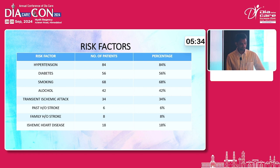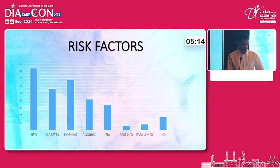Amongst the risk factors, hypertension was the most important, seen in 84% of patients, followed by smoking at 68% and then diabetes at 56%. Other factors included alcohol, transient ischemic attack (TIA) in the past, past history of a major stroke, and family history of stroke or ischemic heart disease. This diagrammatic representation shows hypertension followed by smoking and then diabetes as the major risk factors.